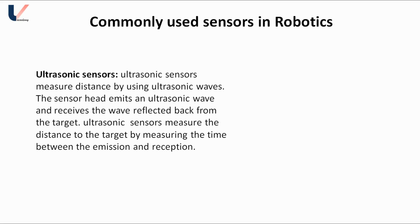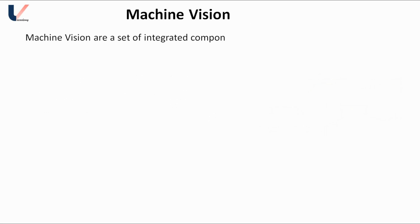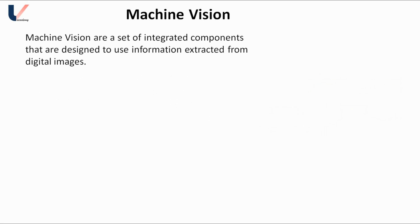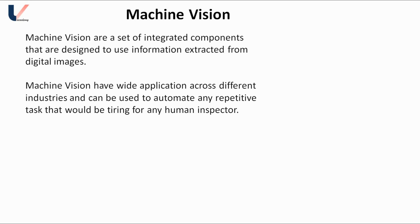The last topic is machine vision. Machine vision is a set of integrated components designed to use information extracted from digital images. It has wide applications across different industries and can be used to automate any repetitive task that would be tiring for a human inspector. Such processes that need to be repeated again and again are automated using machine vision, making it a very important topic from the automation point of view.